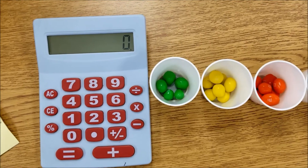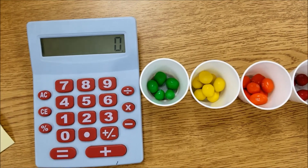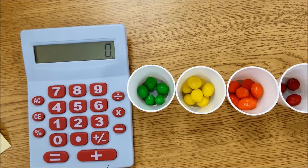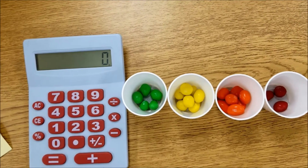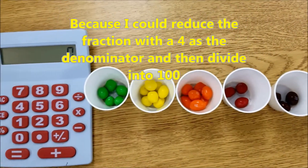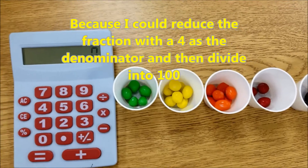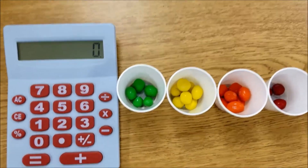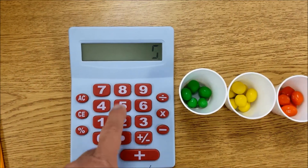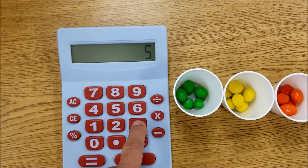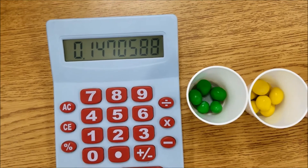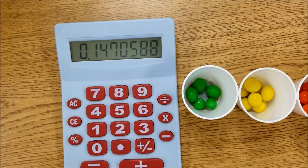Now what we want to do is convert those to percentages. We can take each color and set it up as a fraction to figure out its percent. I'd like to be able to do this on paper — it would have been perfect if there were actually 36 M&Ms because that would have been easier to work on pencil and paper — but we can do the math on a calculator too. For the green, there were five green out of 34, so we would divide five by 34. Rounding, that would be 15%, so 15% of the M&Ms are green.